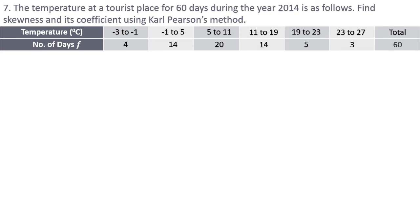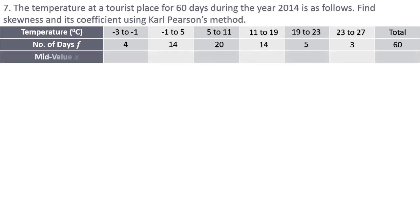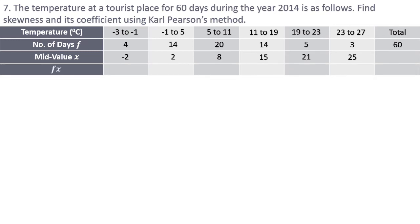The frequency given is number of days: 4, 14, 20, 14, 5, 3 — total 60. Next we calculate the mid values: (−3 + −1)/2 = −2, (−1 + 5)/2 = 2, (5+11)/2 = 8, then 15, 21, and 25. Multiplying these mid values by the frequencies gives fx: 4×(−2) = −8, 14×2 = 28, 20×8 = 160, 14×15 = 210, and so on.